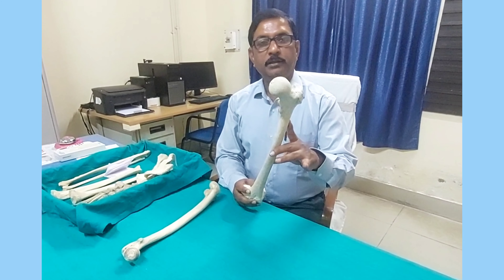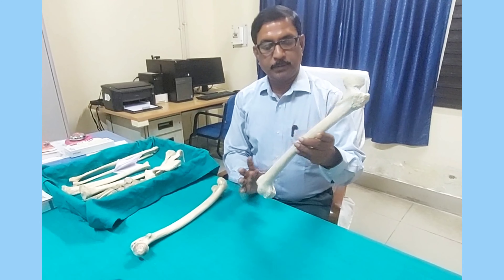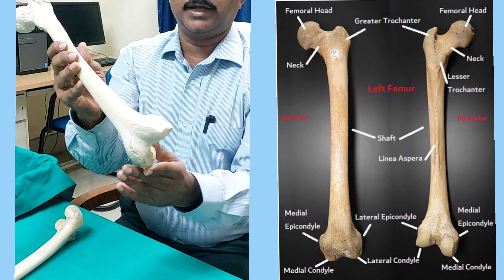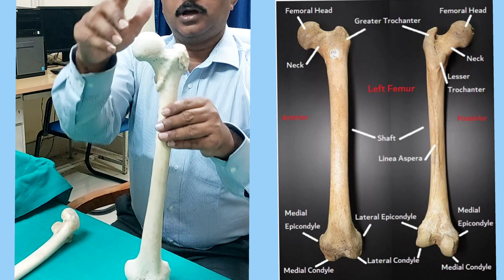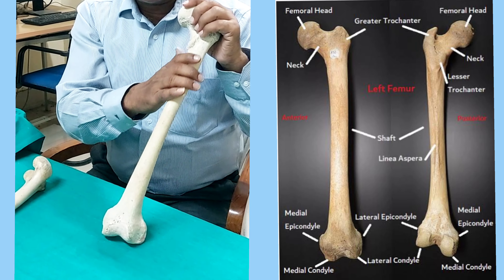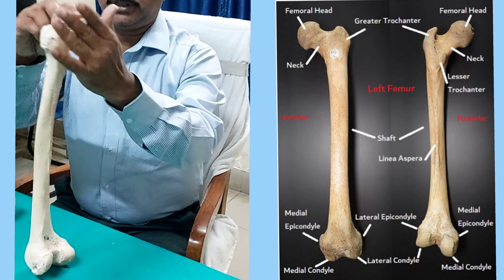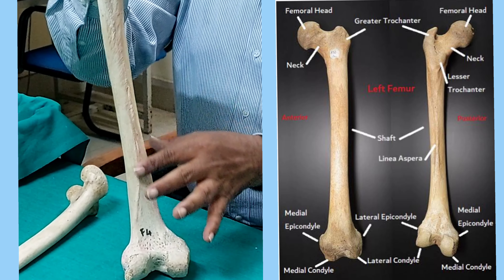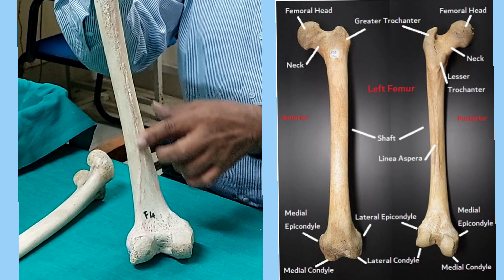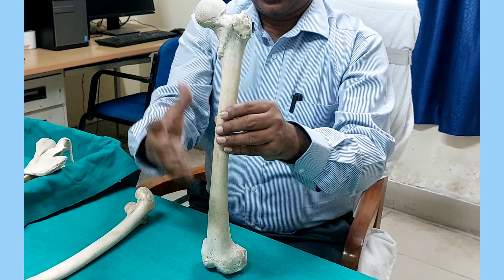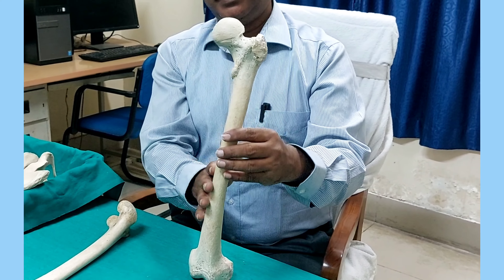Before holding the femur, keep in mind some important anatomical features. This is the upper end, identified by the head, and this is the lower end, identified by the two condyles. Now you know upper end and lower end. For anterior and posterior: the anterior surface is convex and smooth, while the posterior aspect is concave, identified by a prominent ridge called the linea aspera on the posterior side.